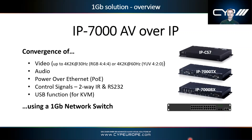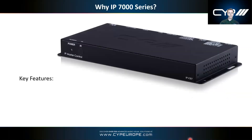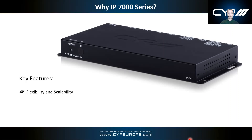All of that is done in our IP7000 series, which includes the IPCS7 controller, the IP7000 TX transmitter, and the IP7000 RX receiver — all run through a one gig network switch. A key feature of AV over IP is flexibility and scalability: you're not limited to a fixed matrix size. You can build it as 2x20, 8x16, 10x40 — whatever you need. You simply add transmitters and receivers as required.